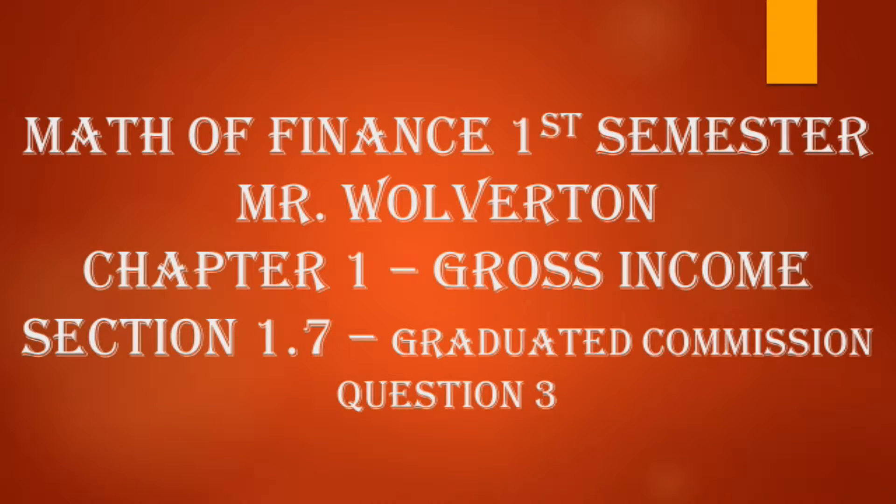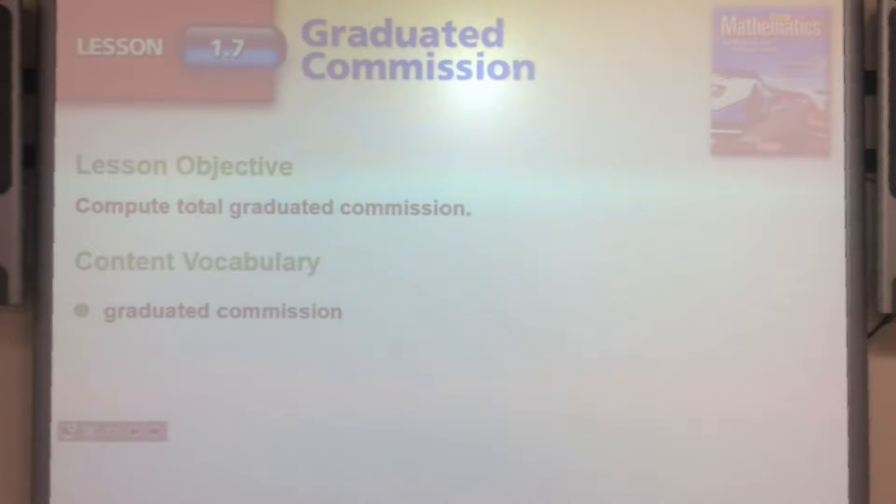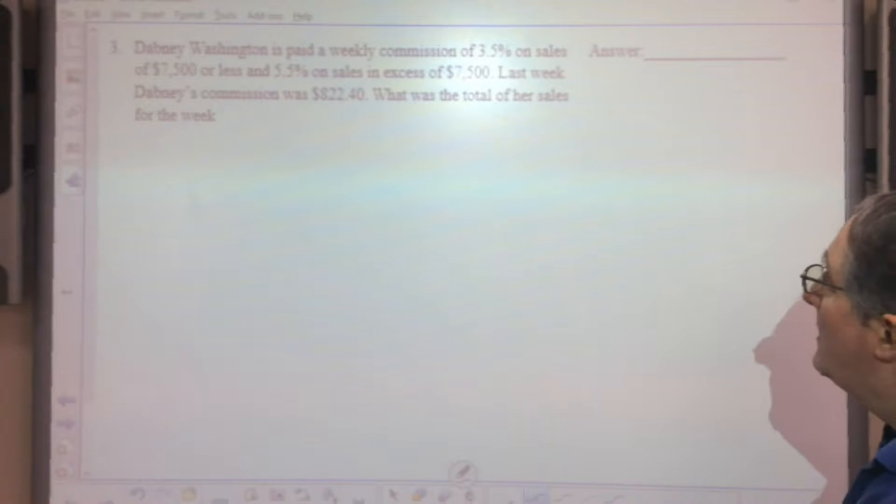We're doing Chapter 1, Section 1.7, Graduated Commission. Graduated commission is a little bit different than regular commission because you're getting different levels you never cross, so each section is just that amount. The formula is the same as regular commission, you just add the different levels.